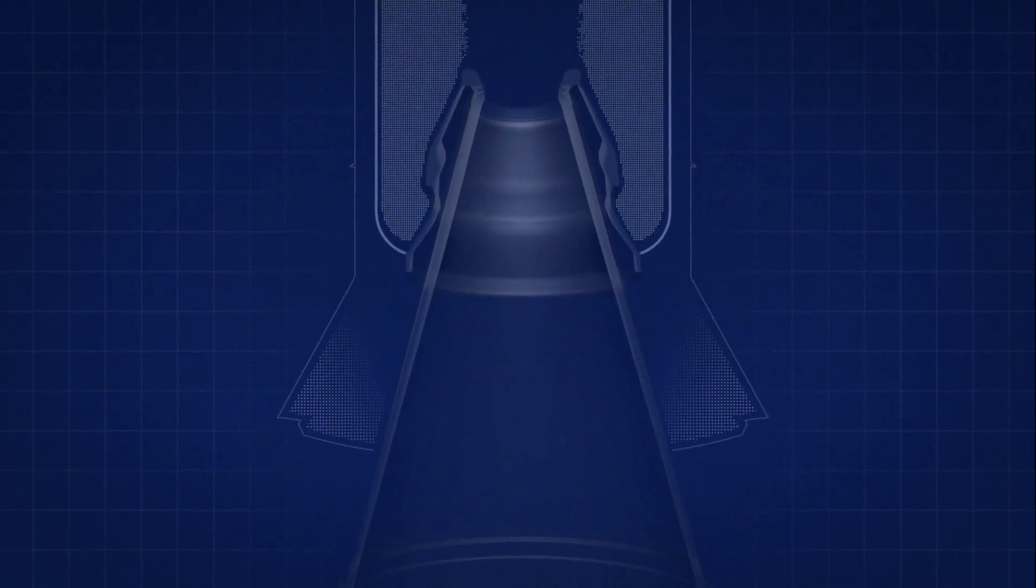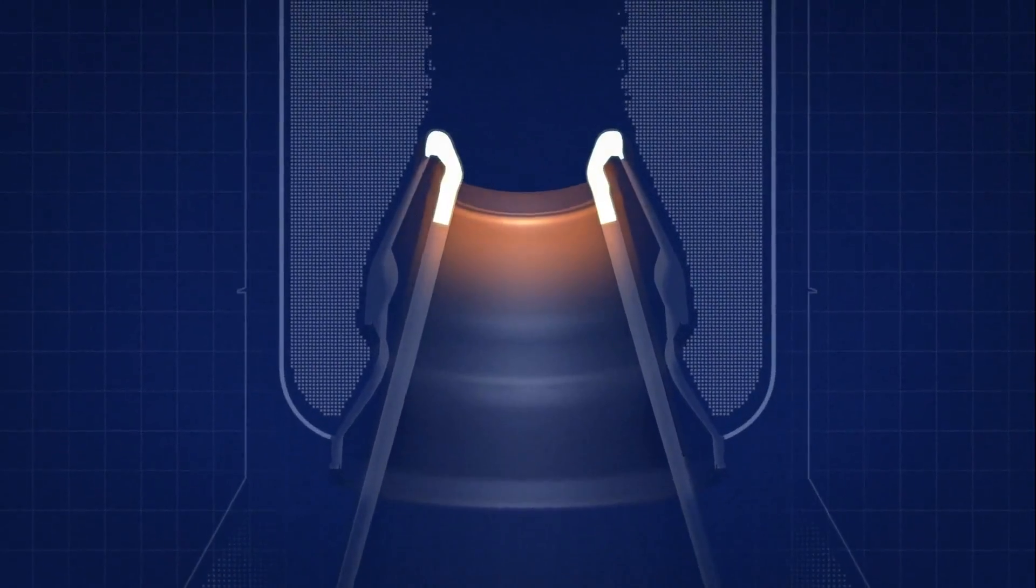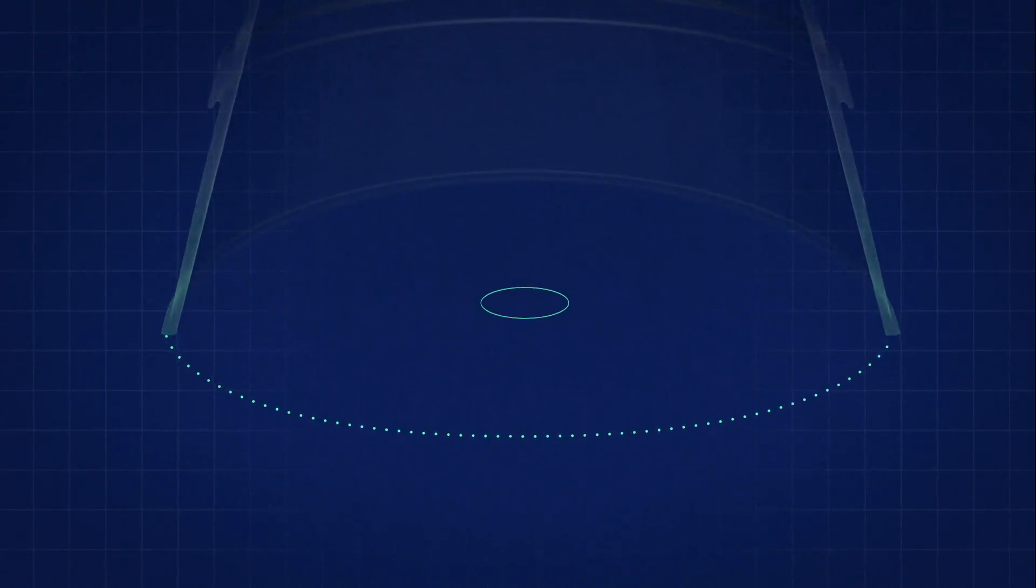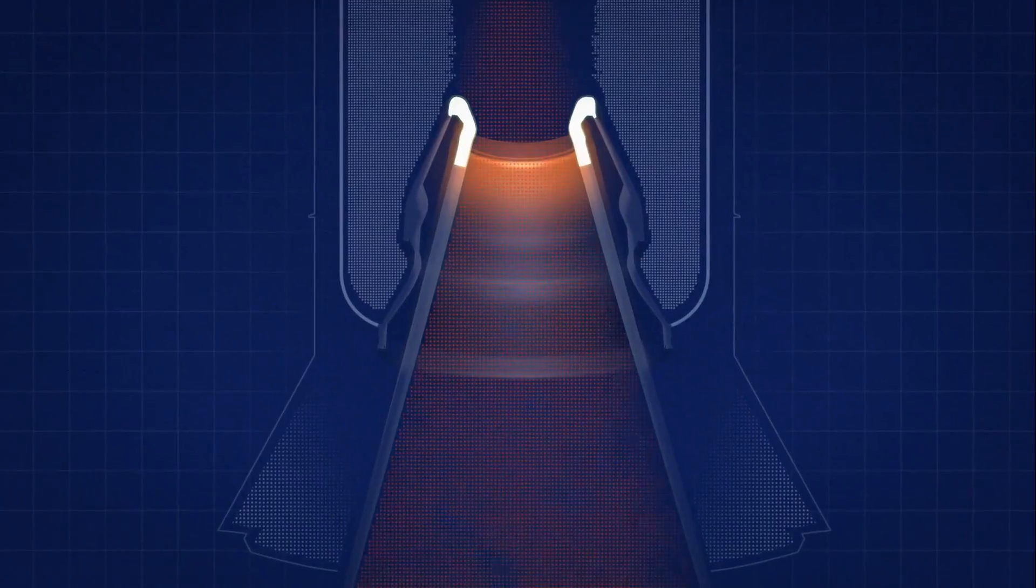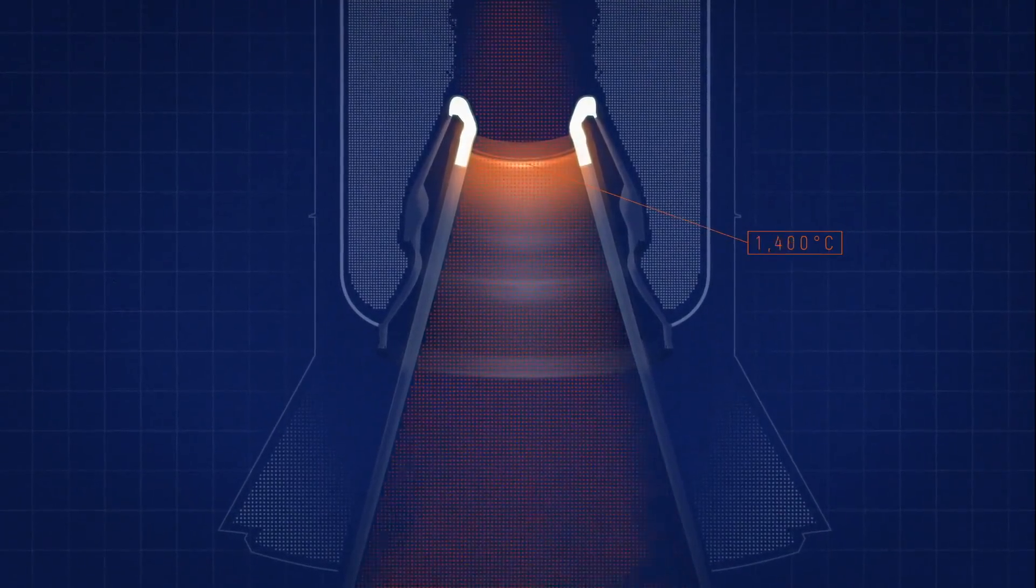The material used to build a nozzle depends on the level of stress, which is greater near the throat and weaker at the nozzle exit. Because the gas released by the combustion of fuel gets as hot as 3,500 degrees,